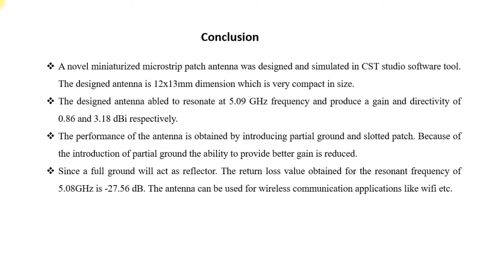Conclusion: We have designed a novel microstrip patch antenna in CST Studio software. The dimension of the antenna is 12 mm x 13 mm, which is very compact in size. The designed antenna resonates at 5 GHz and produces a gain of around 0.86 dBi and directivity of 3.14 dBi. The antenna also gives a very good VSWR value. The performance is obtained by introducing a partial defective ground structure and inserting a slot in the patch. Due to the partial ground, the gain is lower, but we are able to manage the resonant frequency in the lower band.